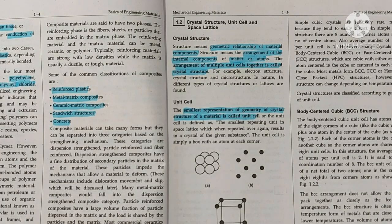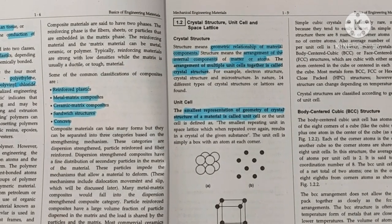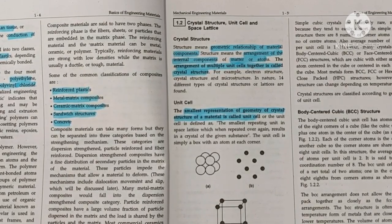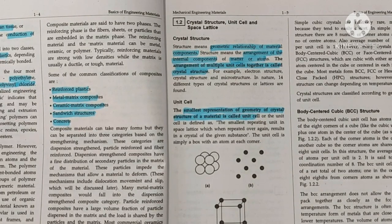The arrangement of multiple unit cells together is called crystal structure. For example, electron structure, crystal structure, and microstructure. In nature, 14 different types of crystal structures or lattices are found.